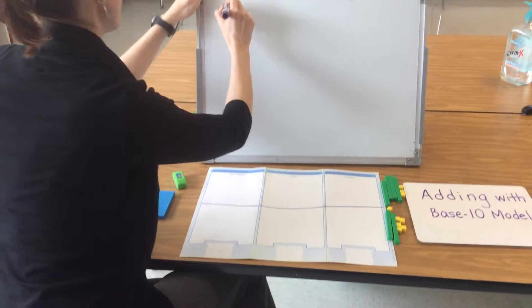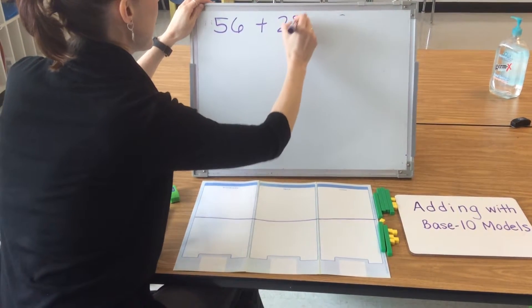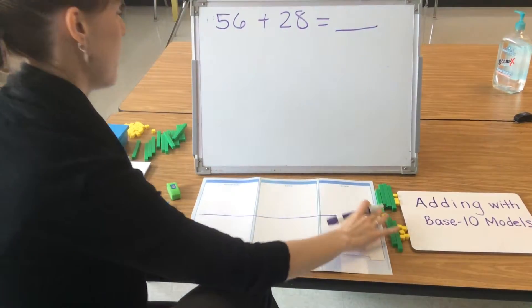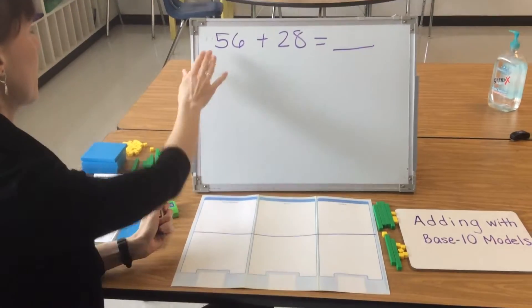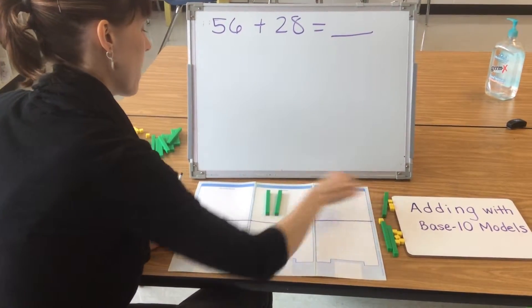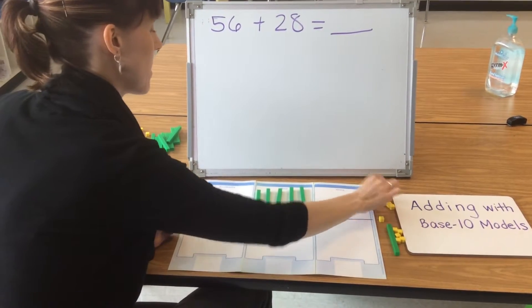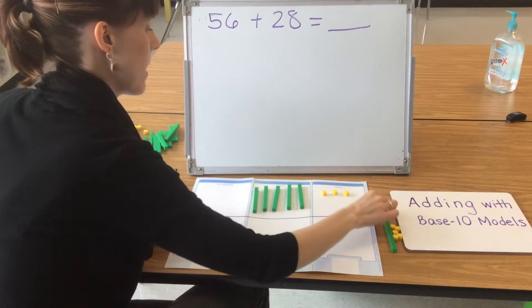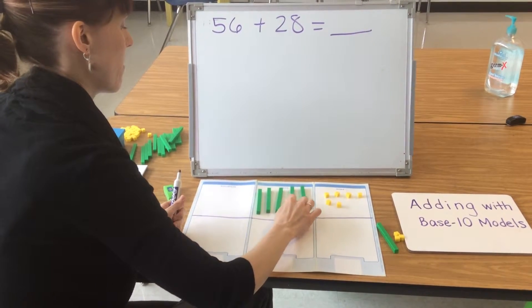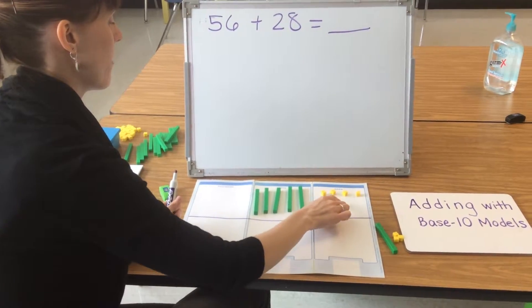How about 56 plus 28 equals something. I start by modeling 56 with 5 tens and 6 ones: 10, 20, 30, 40, 50, 51, 52, 53, 54, 55, 56.